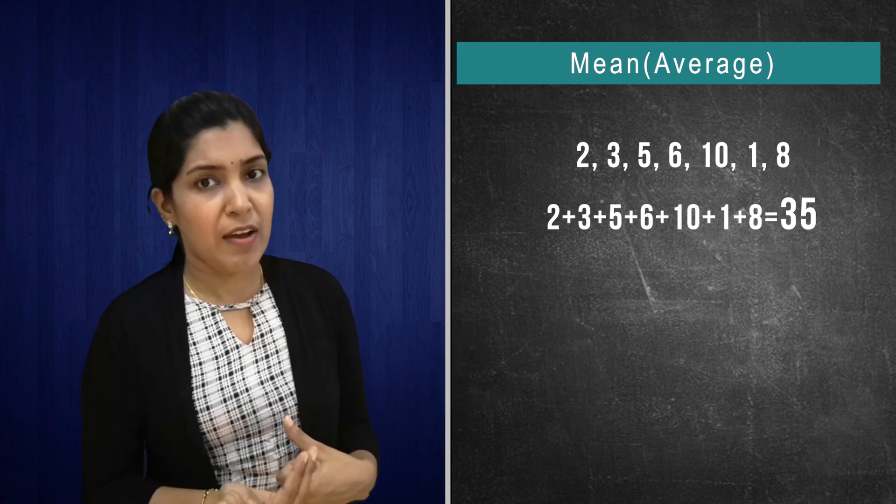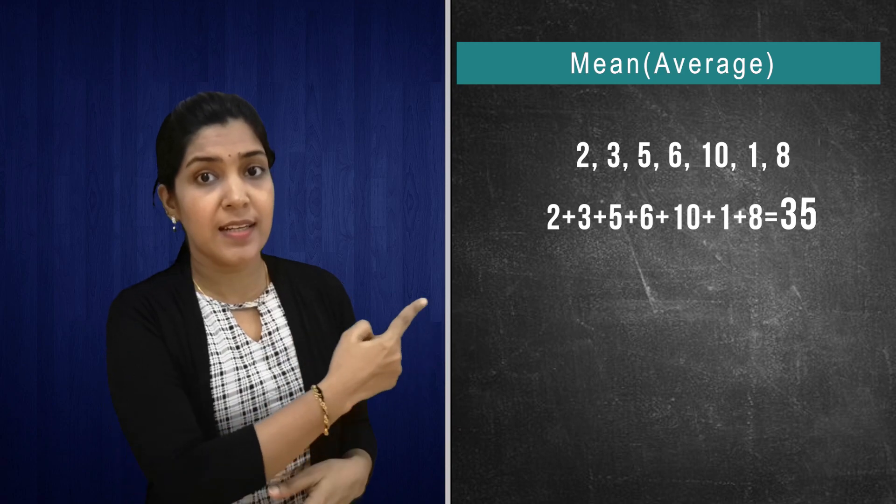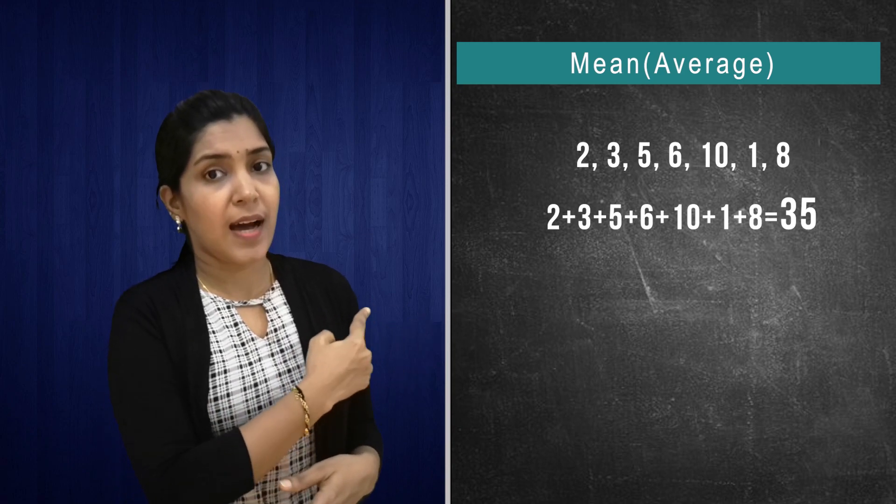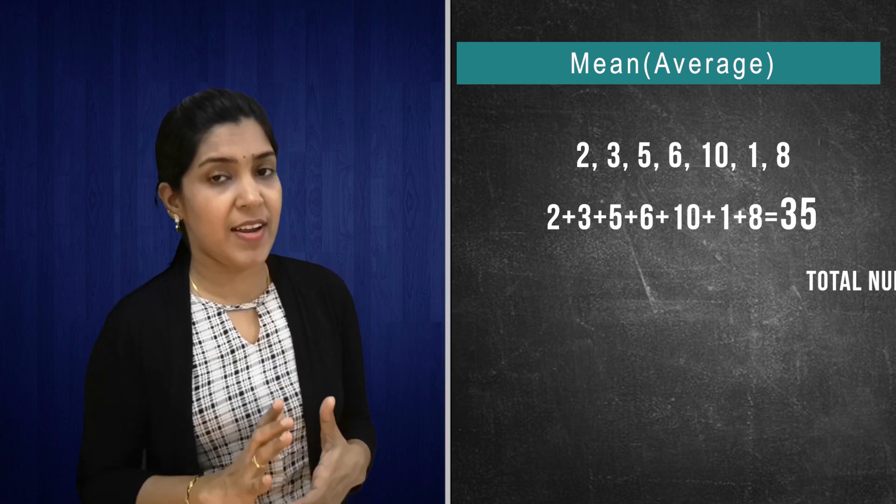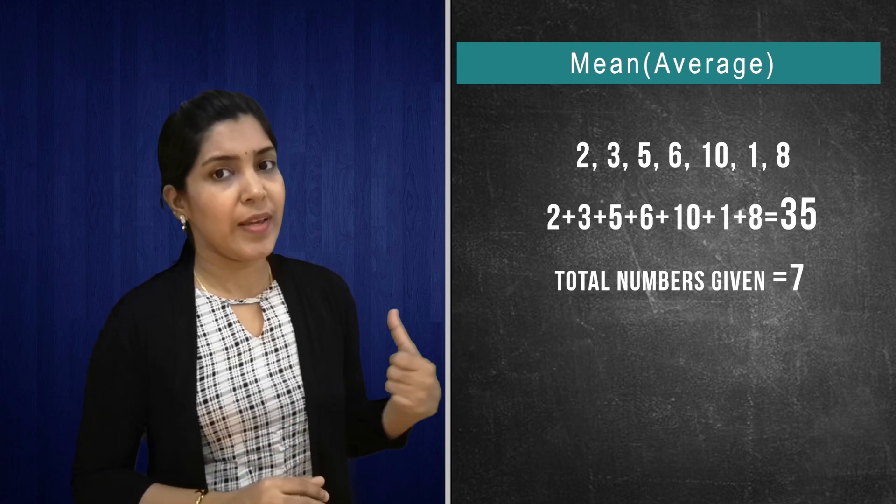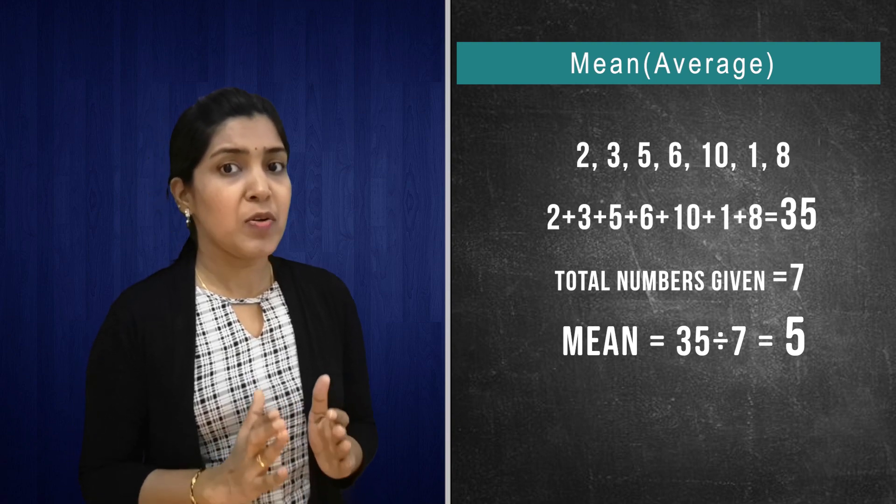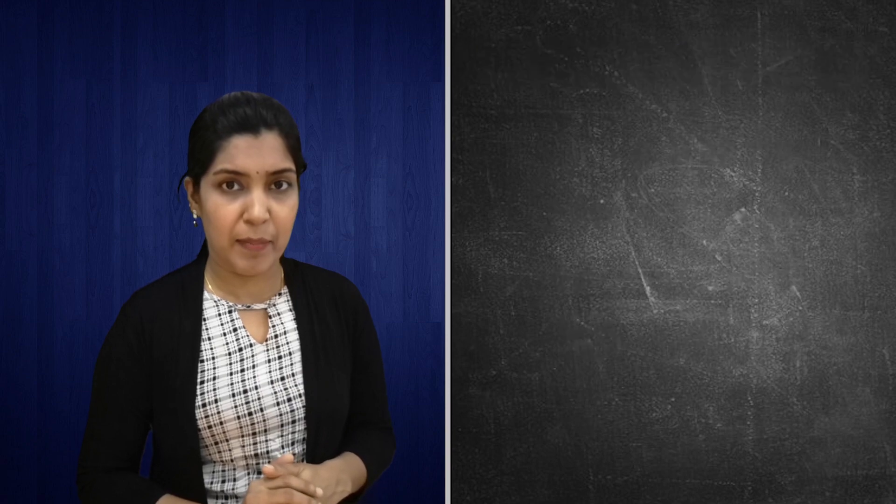Then what you have to do is, you have to divide by seven because here the numbers, how many numbers are given? Seven numbers. So we have to divide by seven. So here is the answer. This is about mean. Mean means average of the given number.